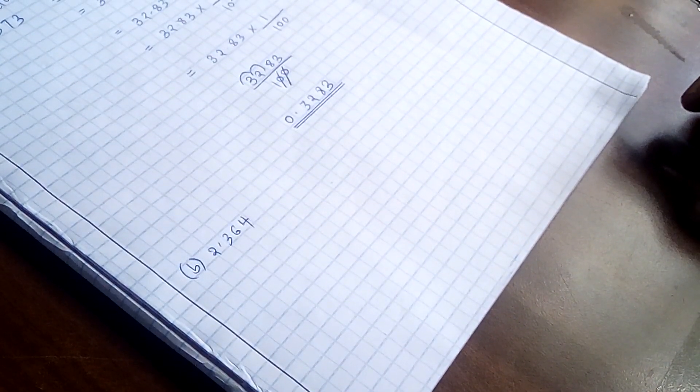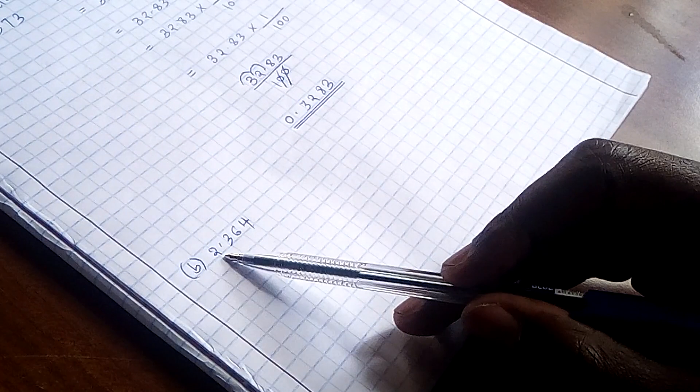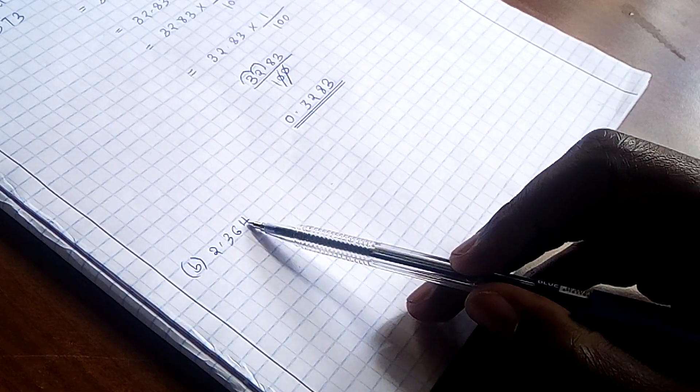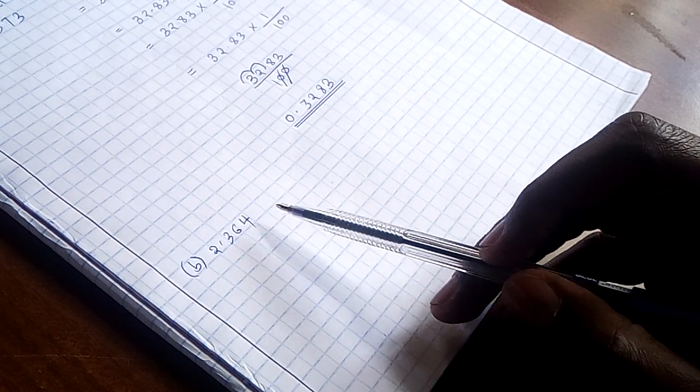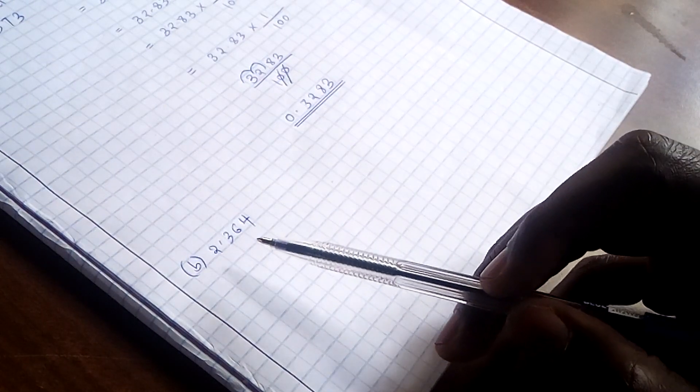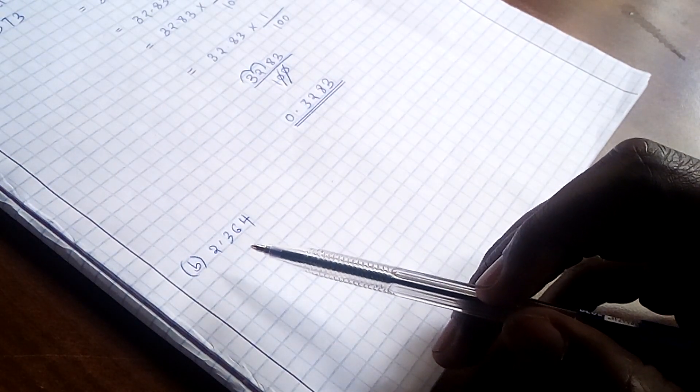So we are going to look at the second example and this is 2.364. How do we get the square of this number? Can we confirm first of all that this number has been written into its standard form?